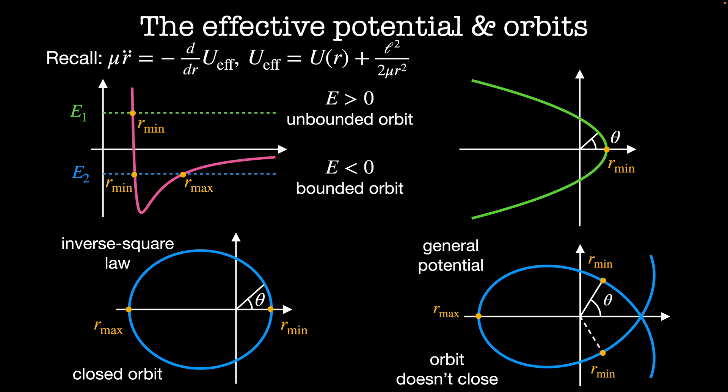For example, the orbit of Mercury isn't closed. The calculation of the precession of Mercury was actually a big clue that there might be some problem with the Newtonian formulation of gravity. Eventually, the framework of general relativity would go on to explain the observed orbits of Mercury and the other planets, as well as objects near black holes.